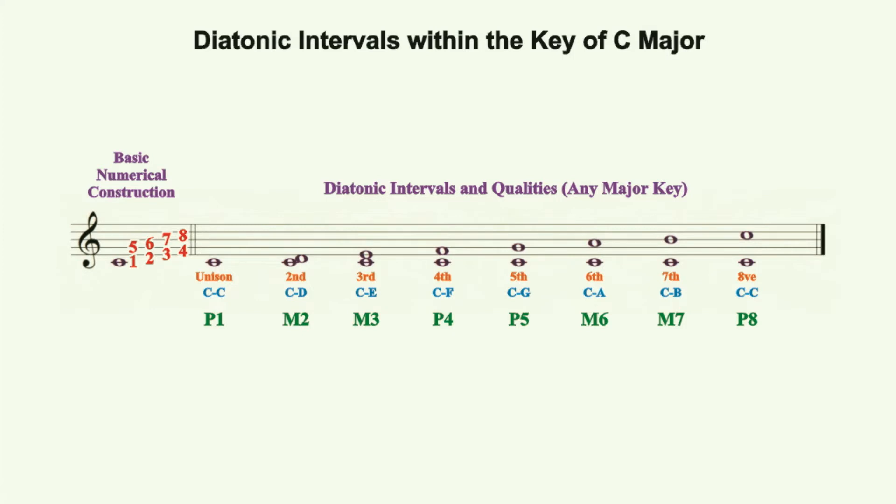We remember that diatonic intervals in any major key will always occur in the same pattern: perfect unison, major 2nd, major 3rd, perfect 4th, perfect 5th, major 6th, major 7th, and perfect octave.